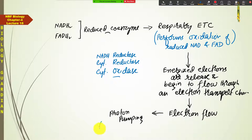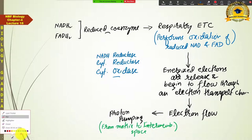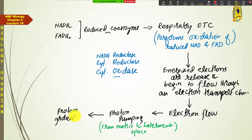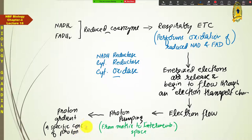When protons are pumped from matrix toward the inter-membrane space, as a result a proton gradient is established in the inter-membrane space. This proton gradient means a specific concentration of protons — that is, H⁺ ions — accumulated in the inter-membrane space.